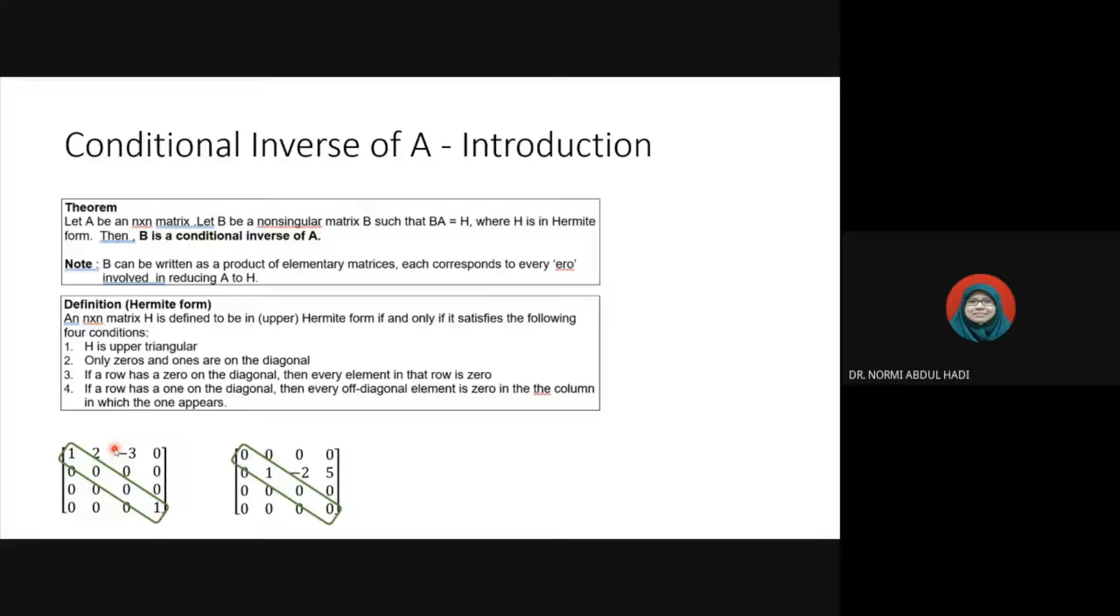Upper triangular matrix, elements on the diagonal must be only zero or one. For zero elements, all elements in that row must be zero. For element one, other elements must be zero.